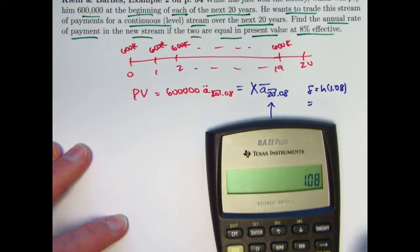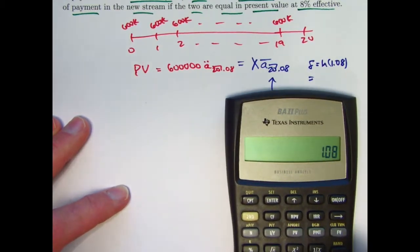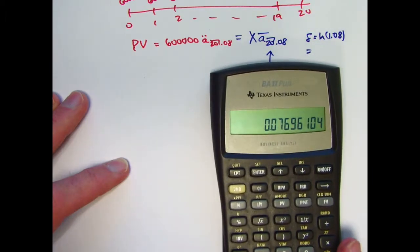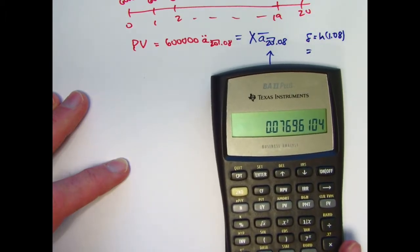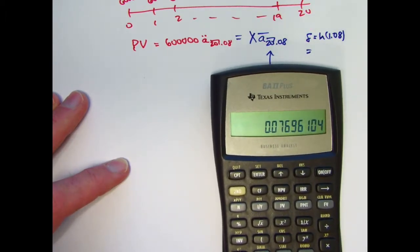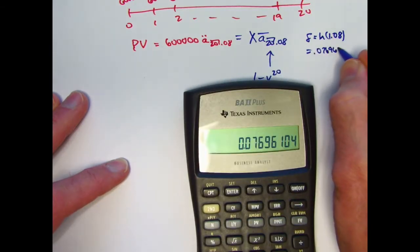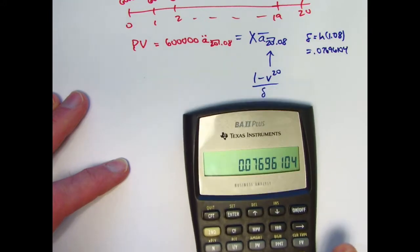1.08 natural log of that is 0.07696. Let me go ahead and store that in register 0. 0.07696104. That is the value of delta.